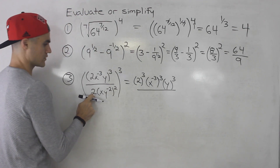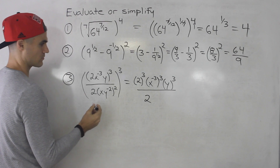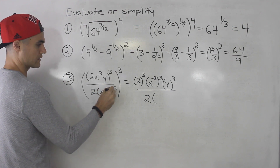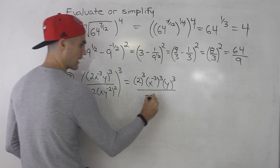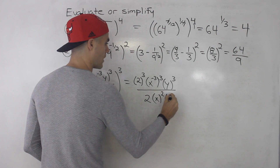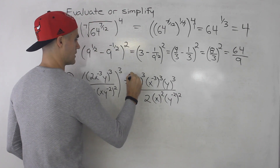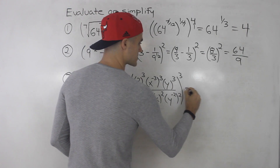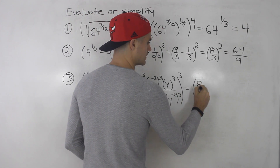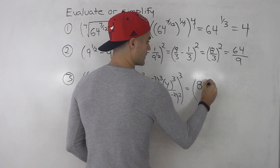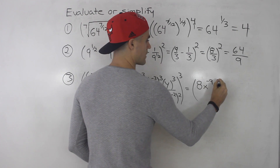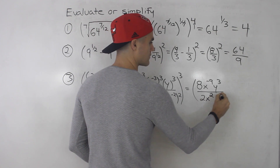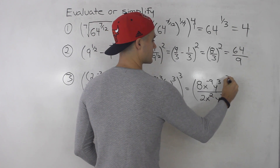The denominator: the 2 is by itself so it stays. Then xy to the negative 2 to the power of 2 — all those terms go to the power of 2 — so x to the power of 2, and y to the negative 2 to the power of 2. This is all to the power of 3. Simplifying: 2 to the power of 3 is 8, negative 3 times 3 is negative 9, y to the power of 3. And negative 2 times 2 is negative 4. That's all to the power of 3.